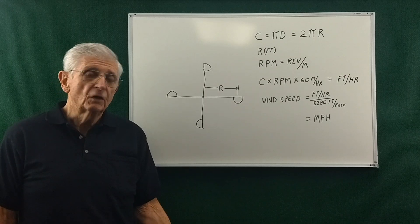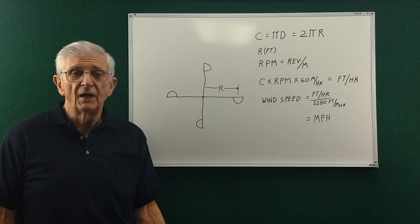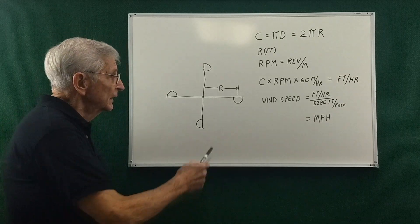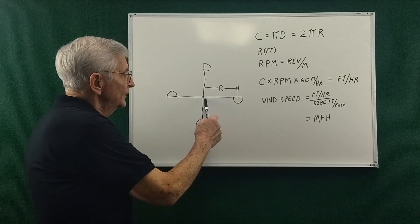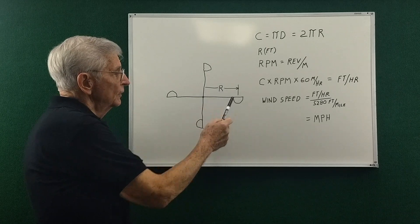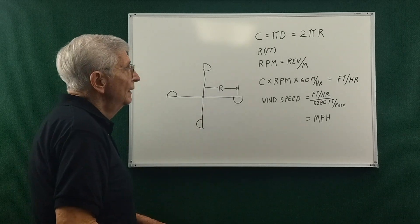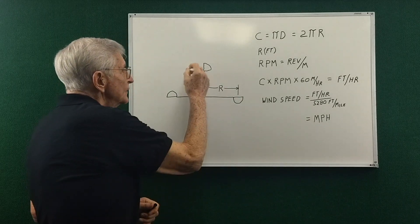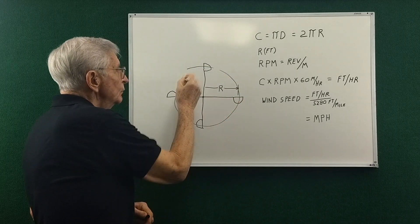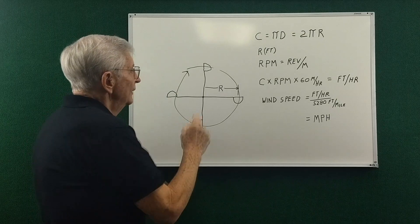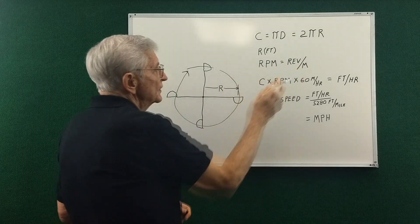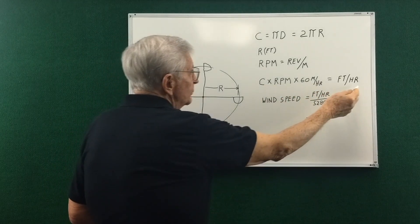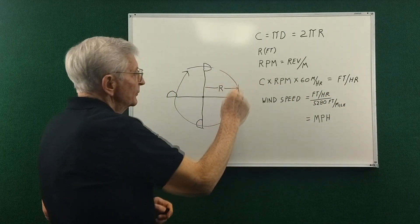So let me start by showing you what you'll find in all these videos. Basically they show an anemometer with a certain radius and basically how to calculate the circumference that these cups run through, and if you can measure the revolutions per minute you can end up with how many feet per hour the cups are going.